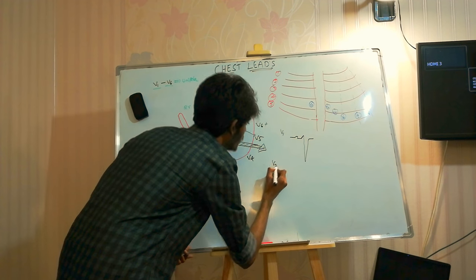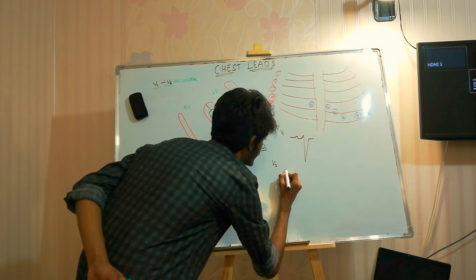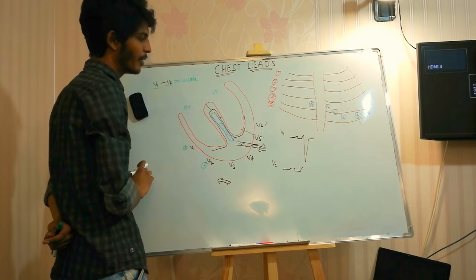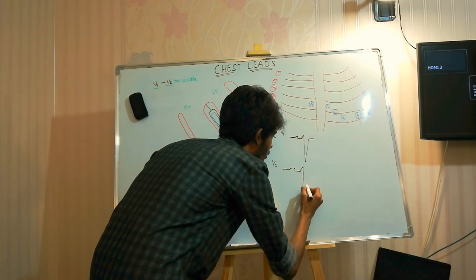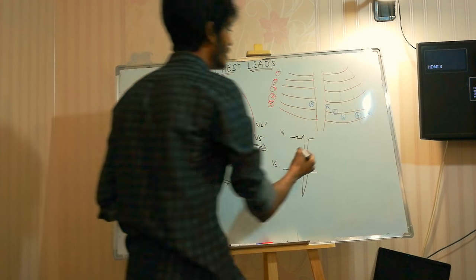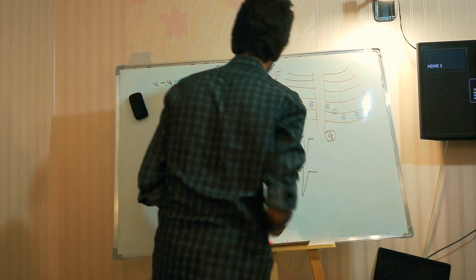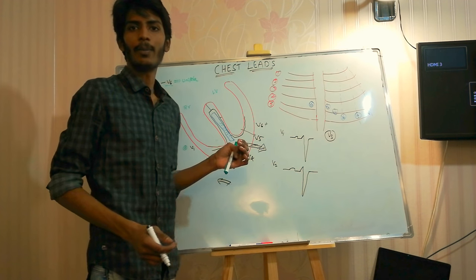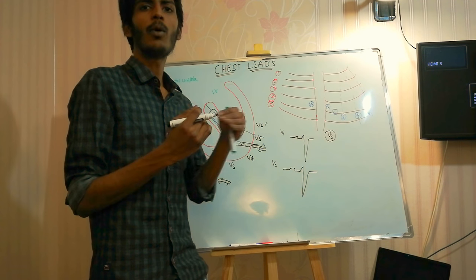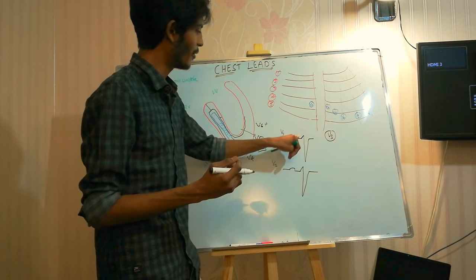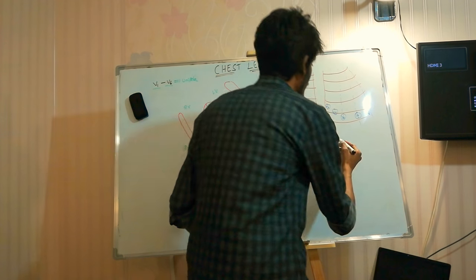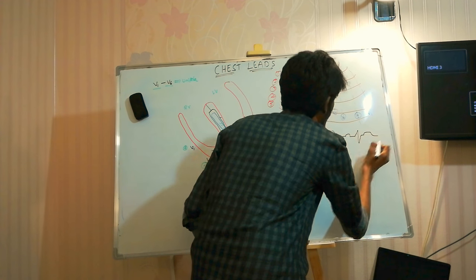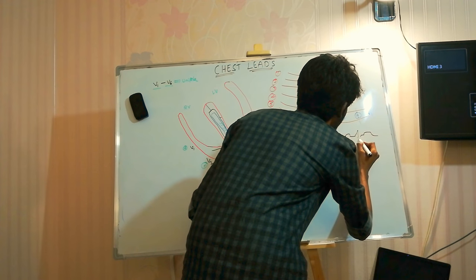V2 is similar: it gives a normal P wave, a positive R wave because electricity is directed somewhat toward V2, and a deep S wave. V3 records a part of the septal tissue and a part of the major ventricular depolarization. So V3 has a bigger R wave compared to V1 and V2, along with a deep S wave.